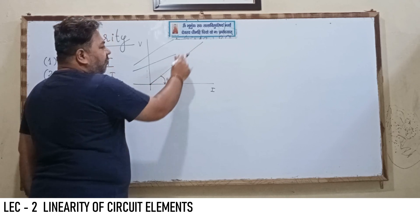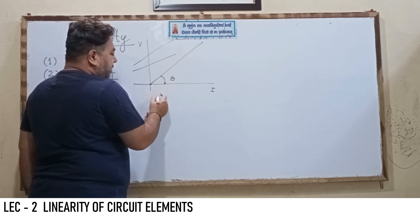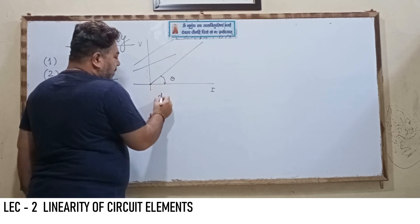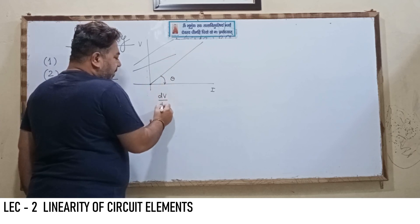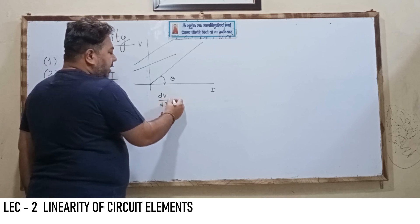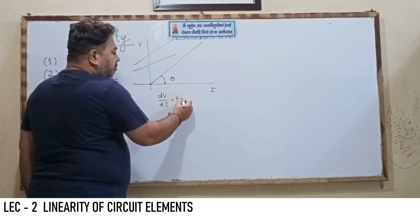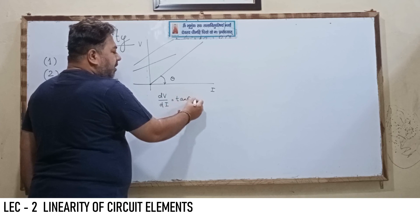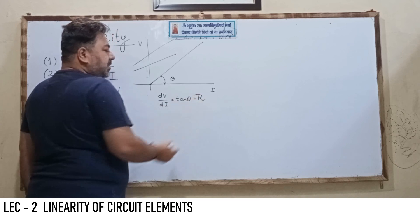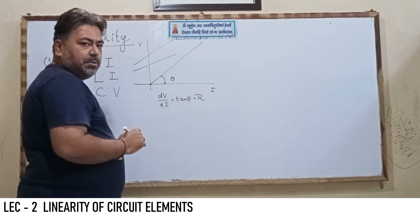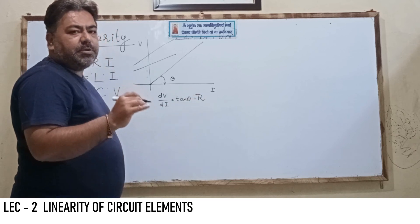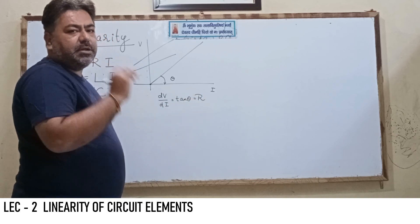Let's say this angle is theta. We have to find the gradient of this particular straight line, which is dv/di — the slope of the straight line — which is also equal to tangent of theta, and it is also equal to the value of the resistance. So this is representing the linear resistor.